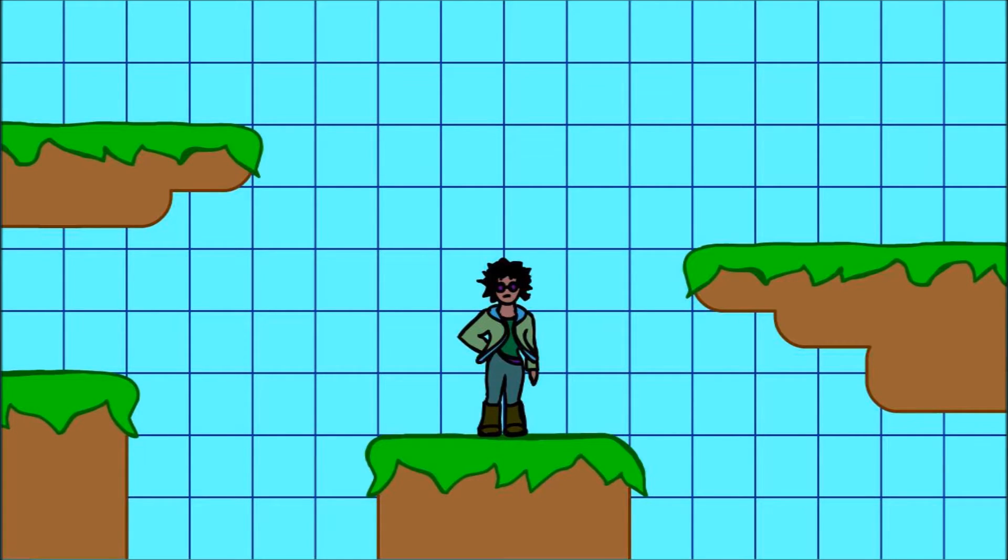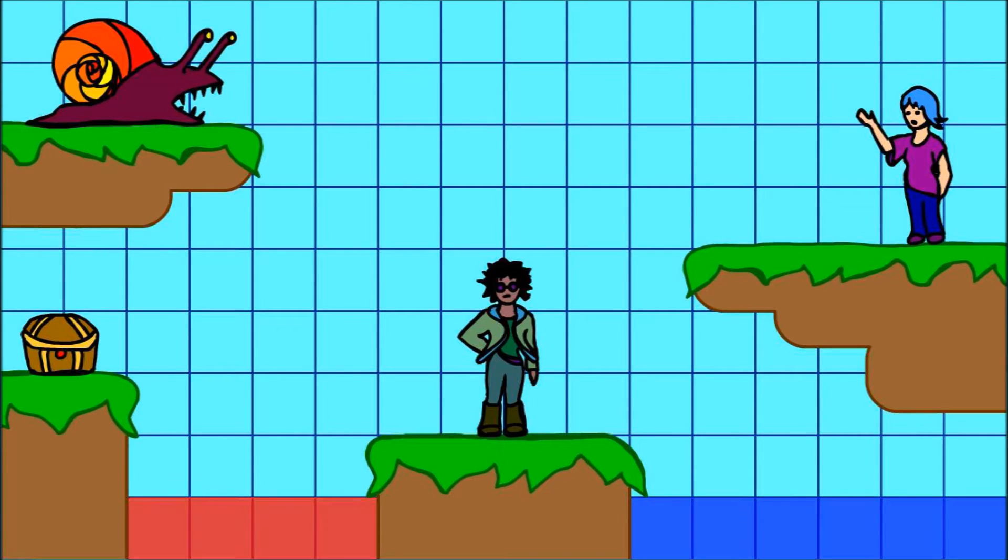It could be filled with tempting treasures, loyal allies, and fearsome enemies, but the important thing to notice about this world is that if you want to specify a certain location in it, you just have to name two numbers.